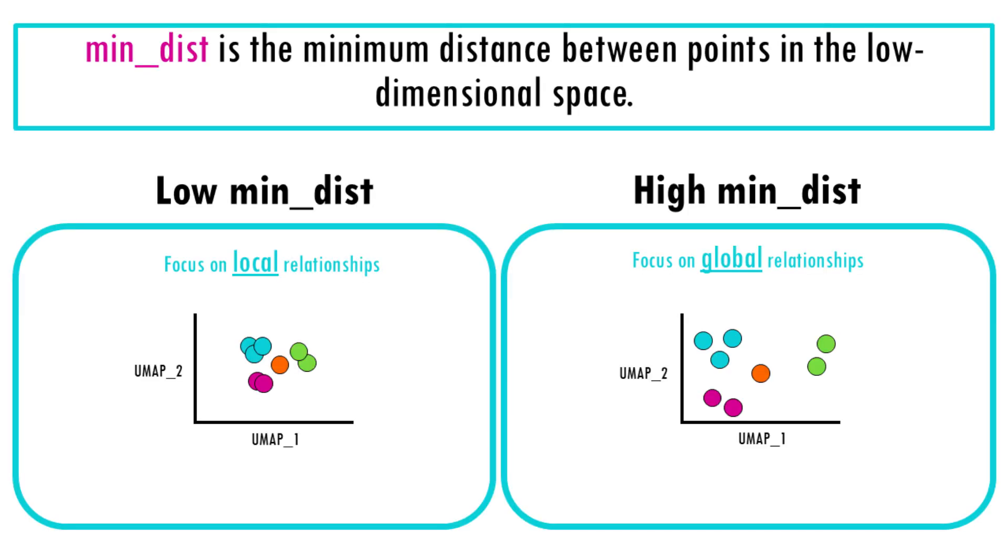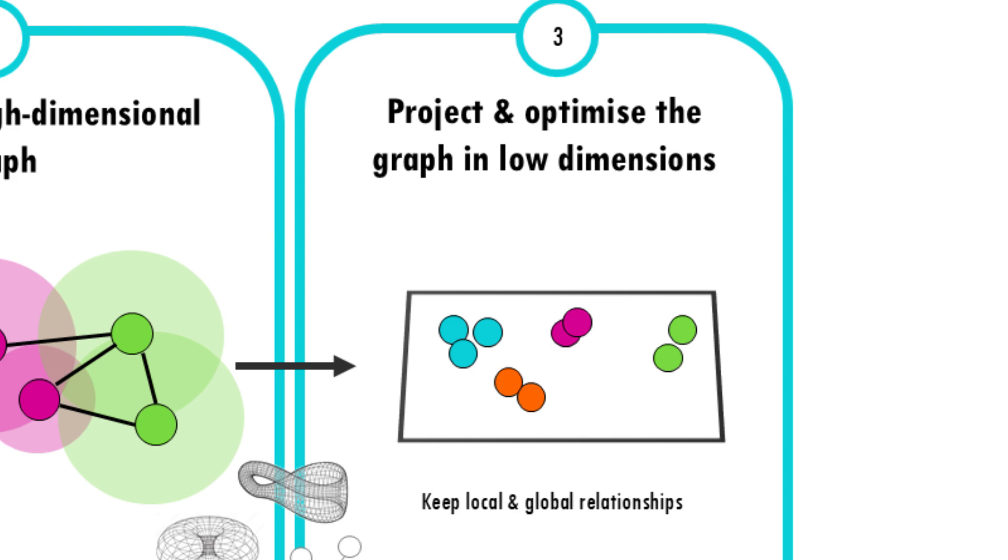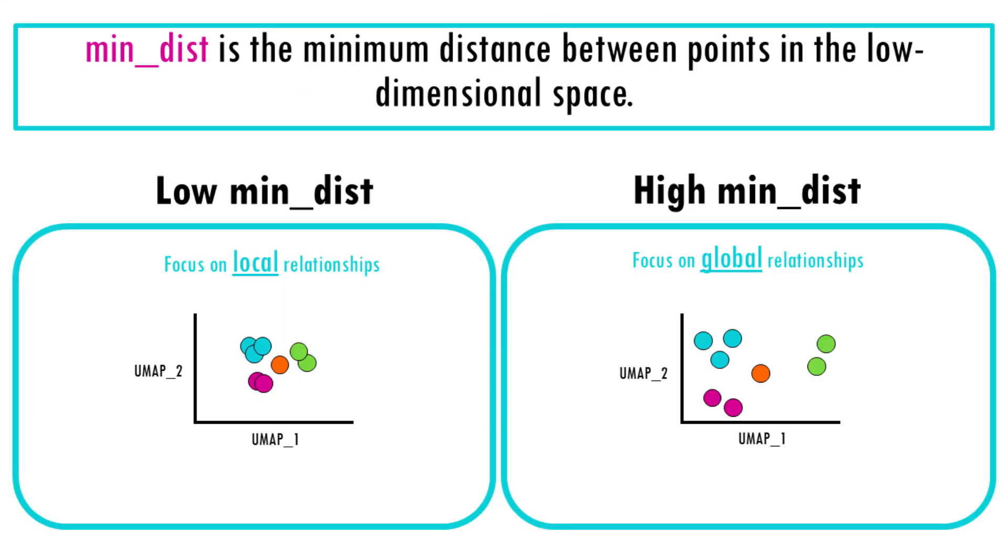The second parameter you need to be aware of in UMAP is MinDist, which is the minimum distance between points in the low dimensional space. So we're not talking about the fuzzy graph anymore. We're talking about our 2D projections. The effect has more to do with how you visualize the relationships we already computed. As you can imagine, when we reduce the minimum distance between points, UMAP will make cells cluster more tightly together. If you increase MinDist, the cells will space out. So we're focusing more on the global structure of the dataset.